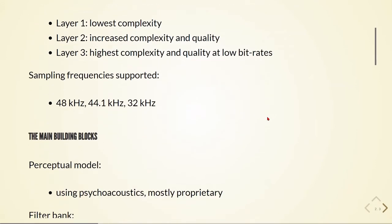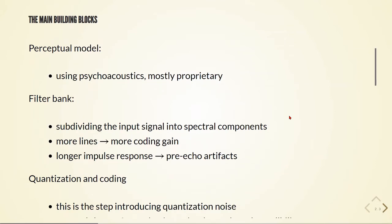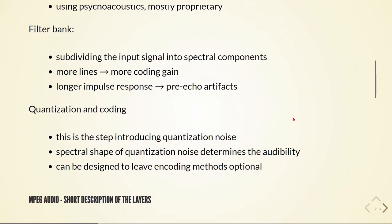The MPEG-1 audio has several main building blocks. First, the perceptual model uses psychoacoustics and is mostly proprietary. Then there is the filter bank block that subdivides the input signal into spectral components, where more lines implies more coding gain and a longer impulse response implies pre-echo artifacts. There is also the quantization and coding block, which introduces quantization noise, where the spectral shape of the quantization noise determines audibility, and encoding methods can be left optional.